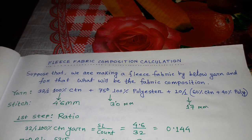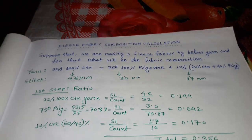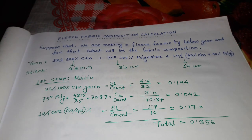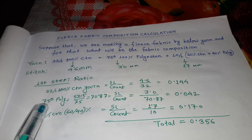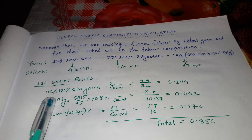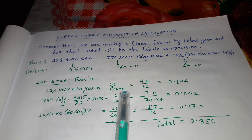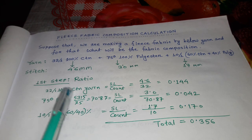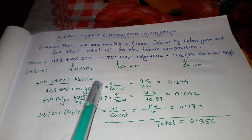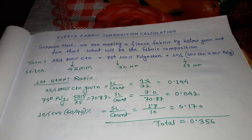We have to calculate this in three steps. In the first step, we calculate the ratio of each yarn using the formula: stitch length divided by count. We are calculating the ratio of these three yarns from their respective stitch lengths.